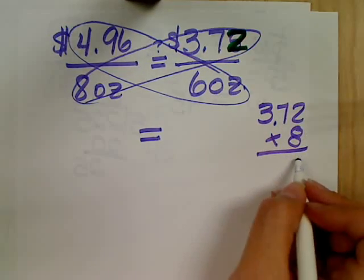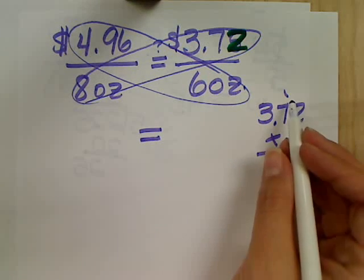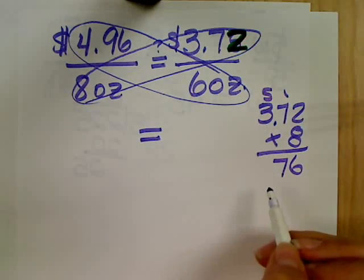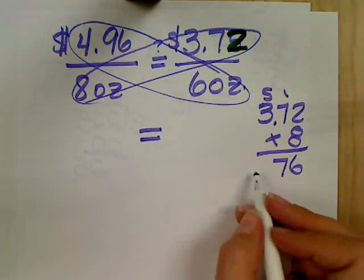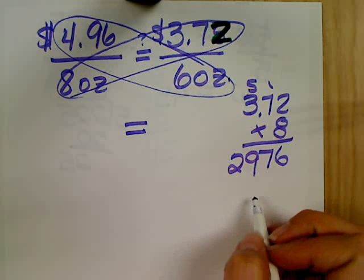8 times 2 is 16. 8 times 7? 56 plus 1? 57. 8 times 3 plus 5? 29. So is it 2,976? No.